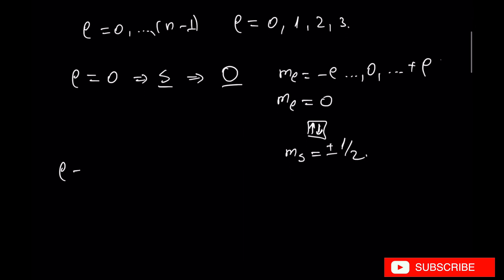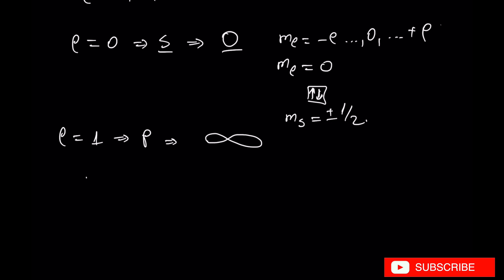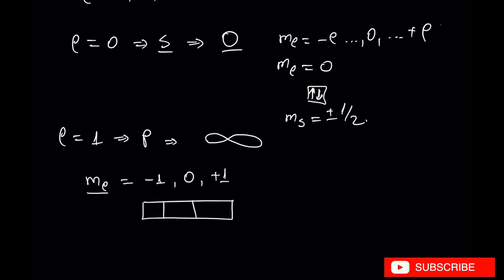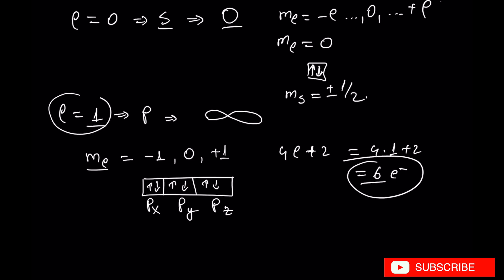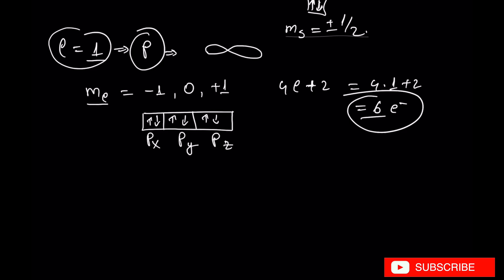Let's move now to L equal to 1, which represents p orbitals. The magnetic quantum number ML for p orbitals is equal to minus 1, 0, and plus 1. According to the magnetic quantum number, which designates orientation in space, we have Px, Py, and Pz. The maximum number of electrons that p can contain is 6. There is a simple formula to find the subshell number of electrons: 4L plus 2. In this case, L is equal to 1, which gives 4 times 1 plus 2 equals 6 electrons — the maximum number that p orbitals can contain.